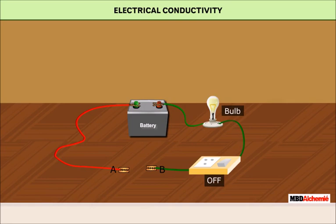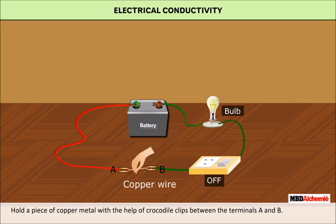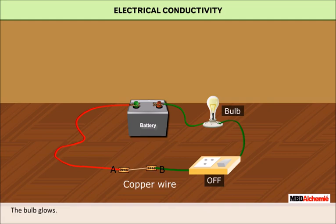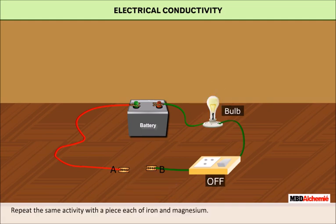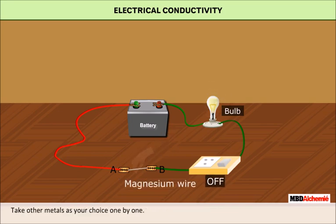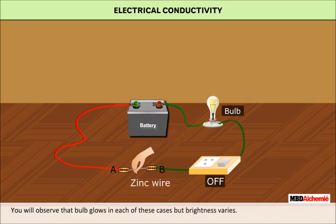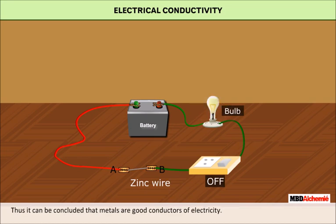Electrical conductivity can be explained with the help of the following activity. Set up a simple electric circuit. Hold a piece of copper metal with the help of crocodile clips between the terminals A and B. The bulb glows. Repeat the experiment with a piece each of iron and magnesium, and take other metals of your choice one by one. You will observe that the bulb glows in each case, but the brightness varies. Thus, we can conclude that metals are good conductors of electricity.